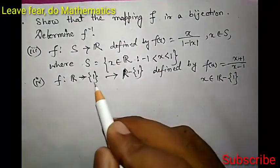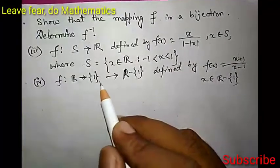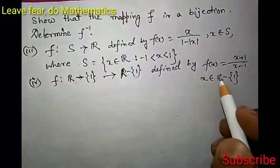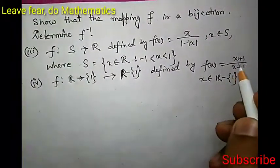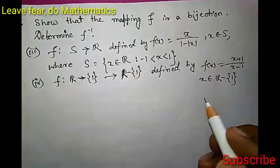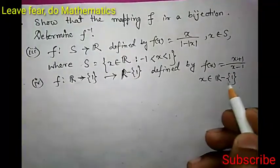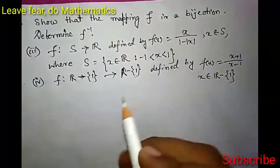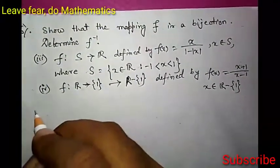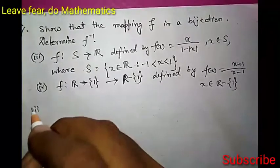Another function is given: f from R minus {1} to R minus {1}, defined by f(x) = (x+1) over (x-1), where x belongs to R minus {1}. Let us first solve the first problem.